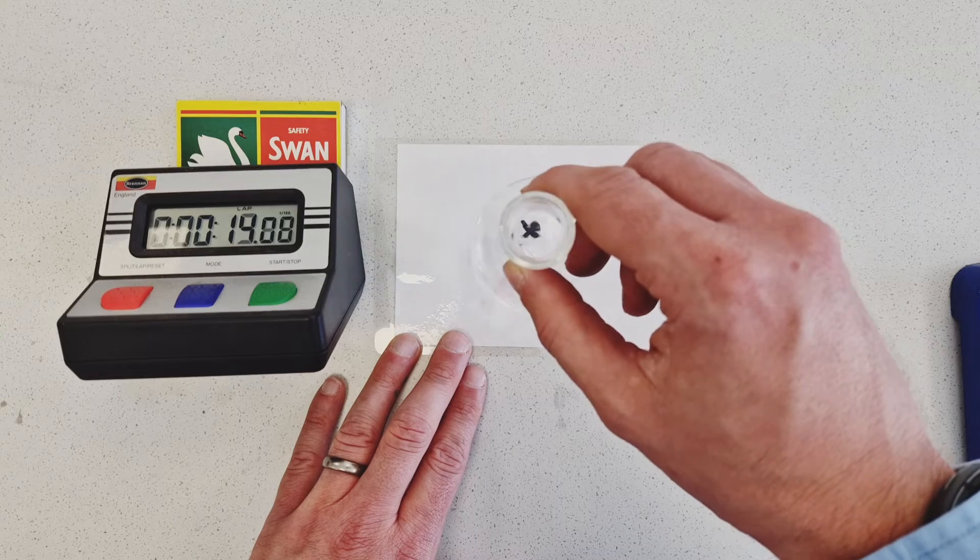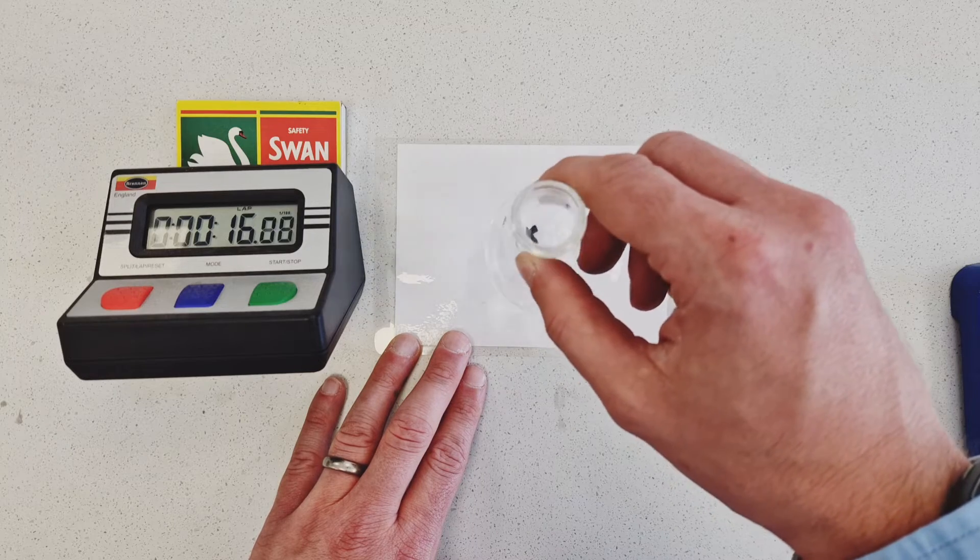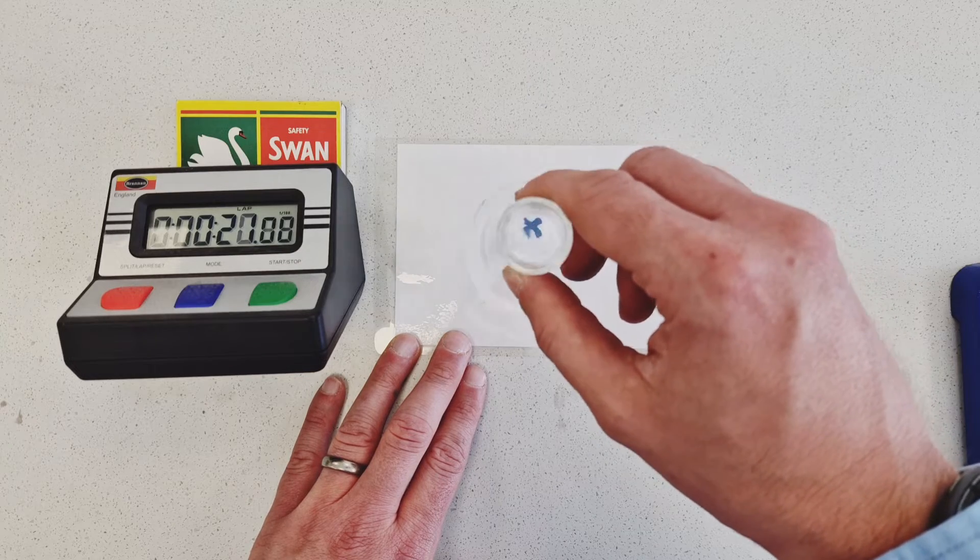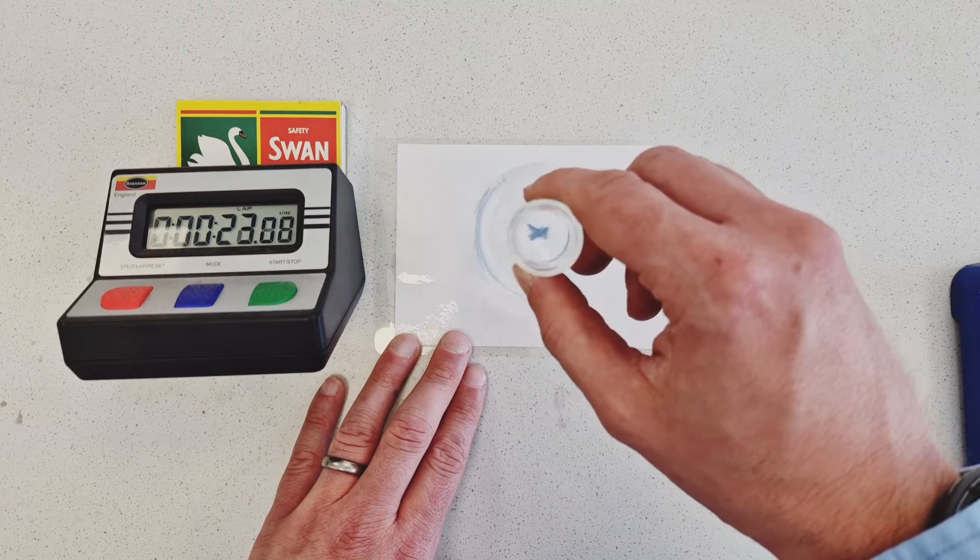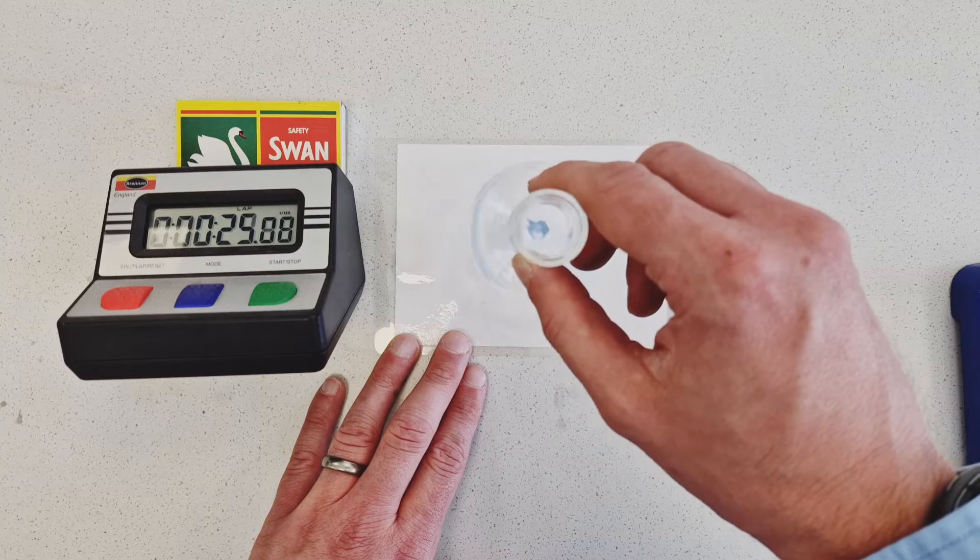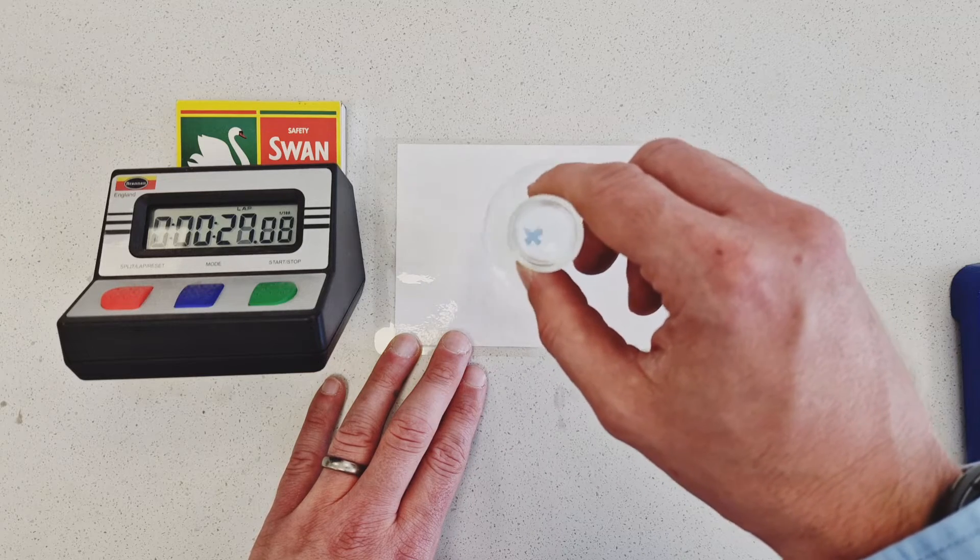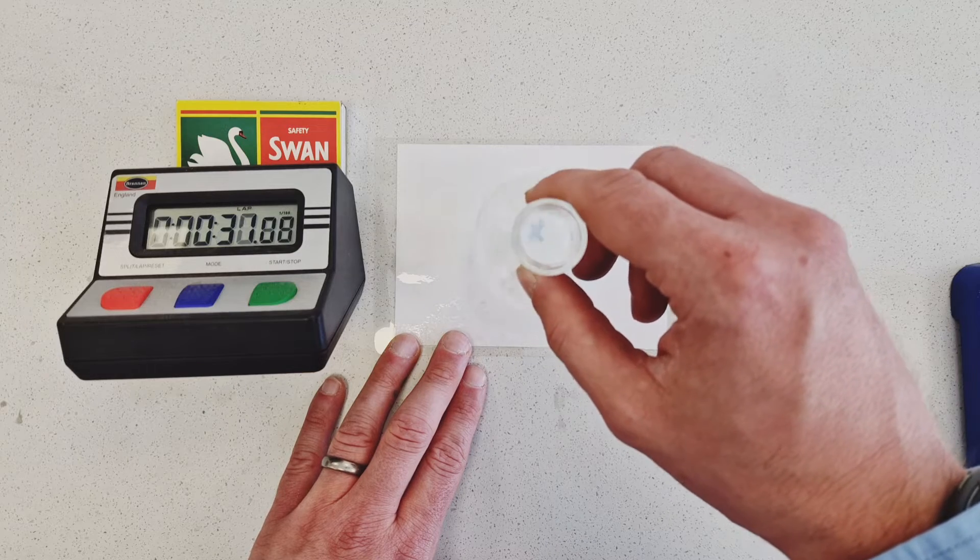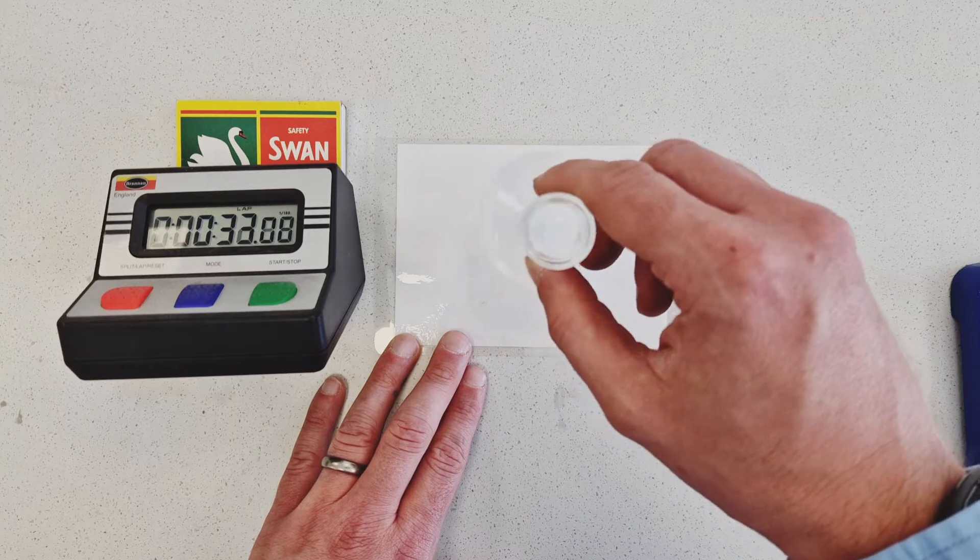This will mean that over time, slowly but surely, the cross will disappear from view as that cloudy suspension is formed. And so we make sure our eye is positioned above the cross looking down through the suspension and we wait until that moment when the cross becomes invisible to stop the stopwatch and this will give us an indication of the rate of the reaction.